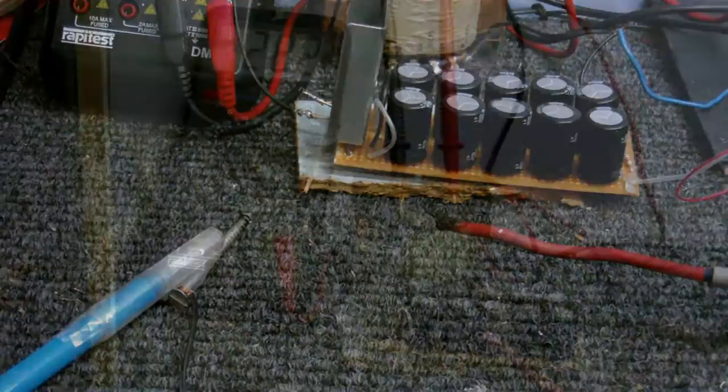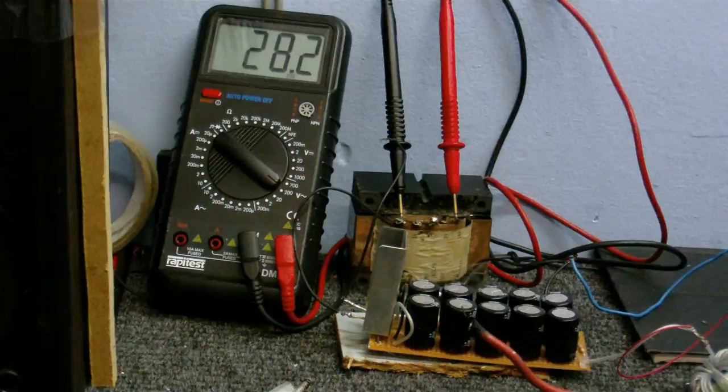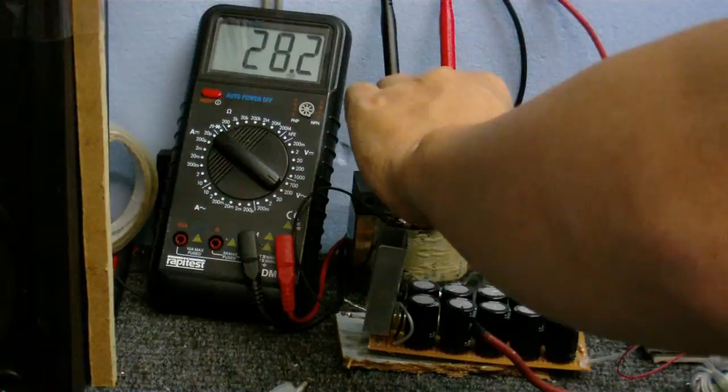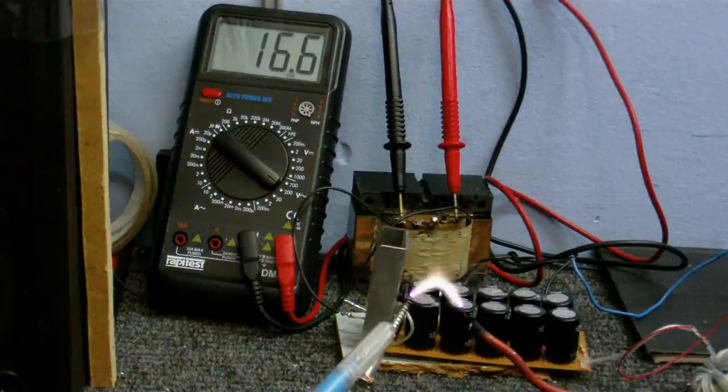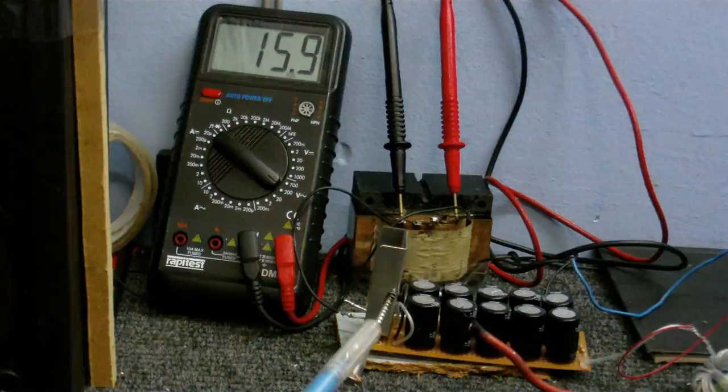Now I have my multimeter connected to the transformers output and as you can see it's doing about 28.2 volts. Now when I connect up the driver, the ZVS driver, as you can see there's a little bit of a voltage drop there. And when I do an arc, you can see it tremendously drops down. That transformer is really struggling to power this thing. We need a stronger transformer.